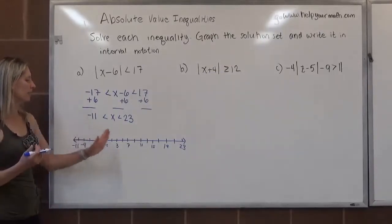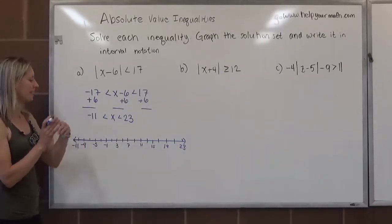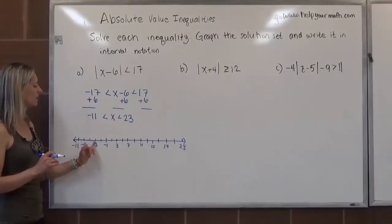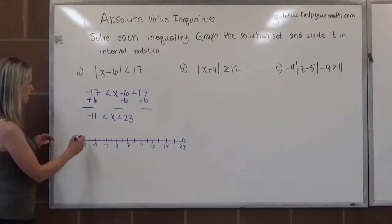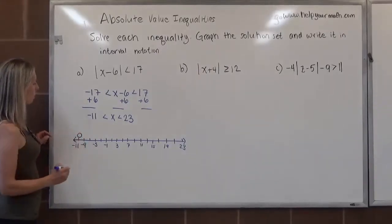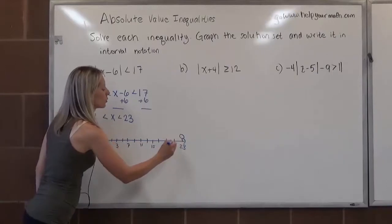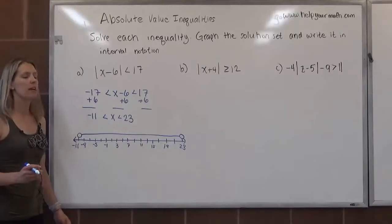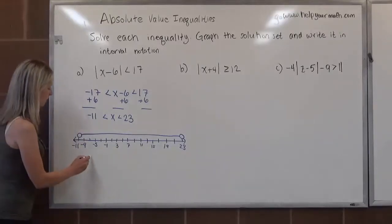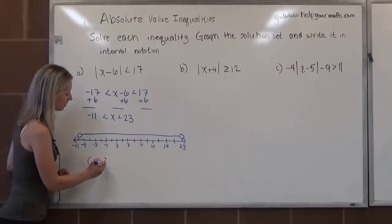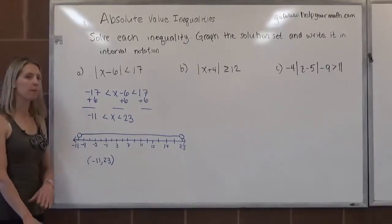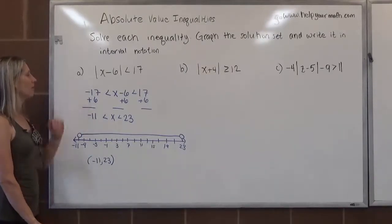So I was able to count by 2s, but just to space it out, I didn't write every other one. But everything is still representing a distance of 2 on my number line. It's going to be an open circle over negative 11, an open circle over 23, and all the numbers in between negative 11 and 23. In interval notation, it would start at negative 11 where we don't include it, so we use the parenthesis, and it goes up to 23 where we also don't include it, so we use the parenthesis.